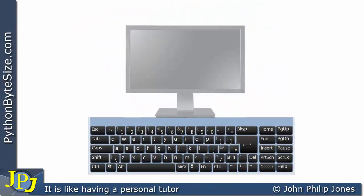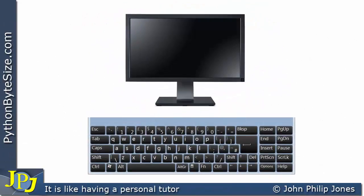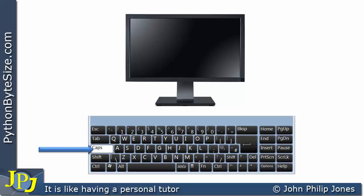Consider the following keyboard and monitor. What we're going to do is hit the A key on the keyboard, and you can see it's lowercase A. That will place a lowercase A in some kind of editor on the monitor. If we now put caps lock on and press the same A key, we'll get capital A appearing on the monitor.